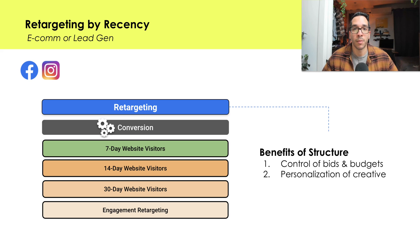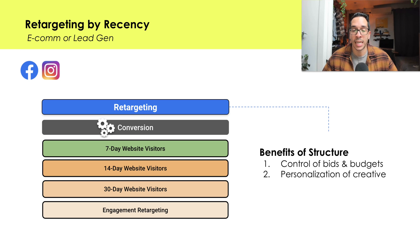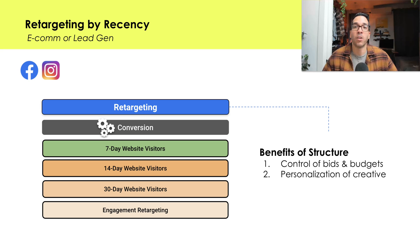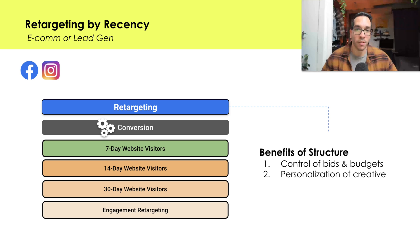Depending on how you set up your campaigns, you might want to test this setup with CBO and allow the algorithm to maximize budget based on where it's seen results. You might also want to test this against a control period where you're doing ad set level budgets to see if it gives you a difference in performance. This is something you definitely want to test.